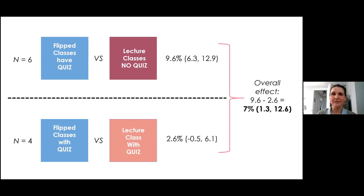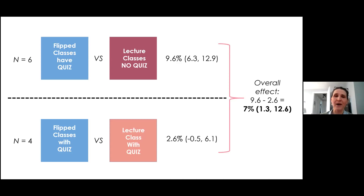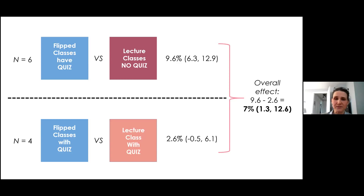The overall effect of quizzes is the difference between these two comparisons and suggests that the advantage of the flipped class in our pooled estimate is attenuated by accounting for weekly class quizzes. Heterogeneity was also reduced to 72% when we accounted for weekly class quizzes.